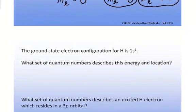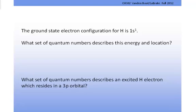Let's take a look at an example here. The ground state electron configuration for hydrogen is 1s1. This is the orbital notation, which indicates that the one electron is in the ground state, which is the lowest energy level.